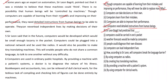Look at the next question: 'Sir Leon Baggrid had predicted that...' — what was his prediction? The next paragraph says: 'Sir Leon said that in the future, computers would be developed which would be small enough to carry in the pocket.' So his prediction was that computers could be carried in one's pocket — that was his prediction.